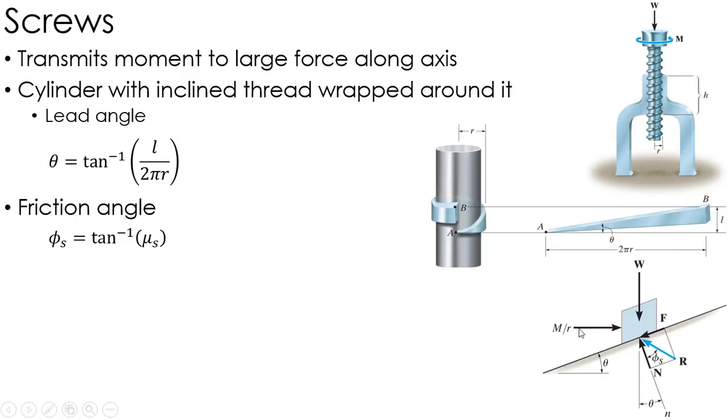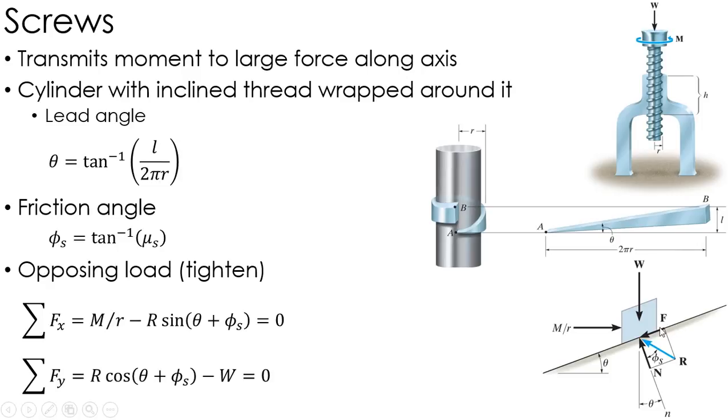So now to figure out how much force or moment it's going to take to move it up the ramp, I just sum the forces in the X and Y, the horizontal and the vertical. So in the horizontal direction, I have M divided by R, and then I have R, and then these two angles here, cosine of those two added together, the friction angle and the lead angle.